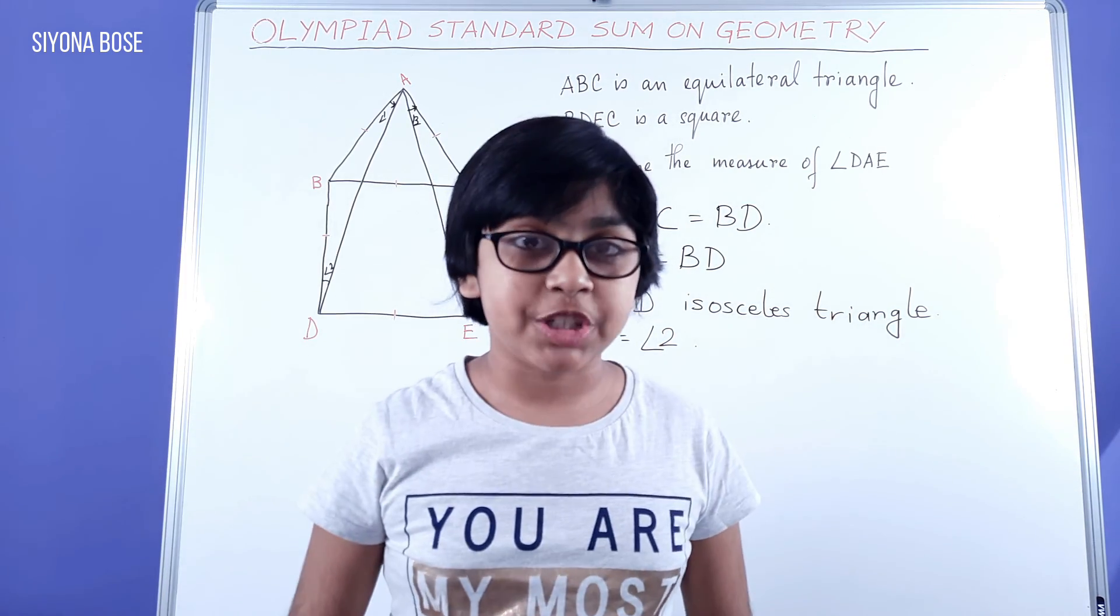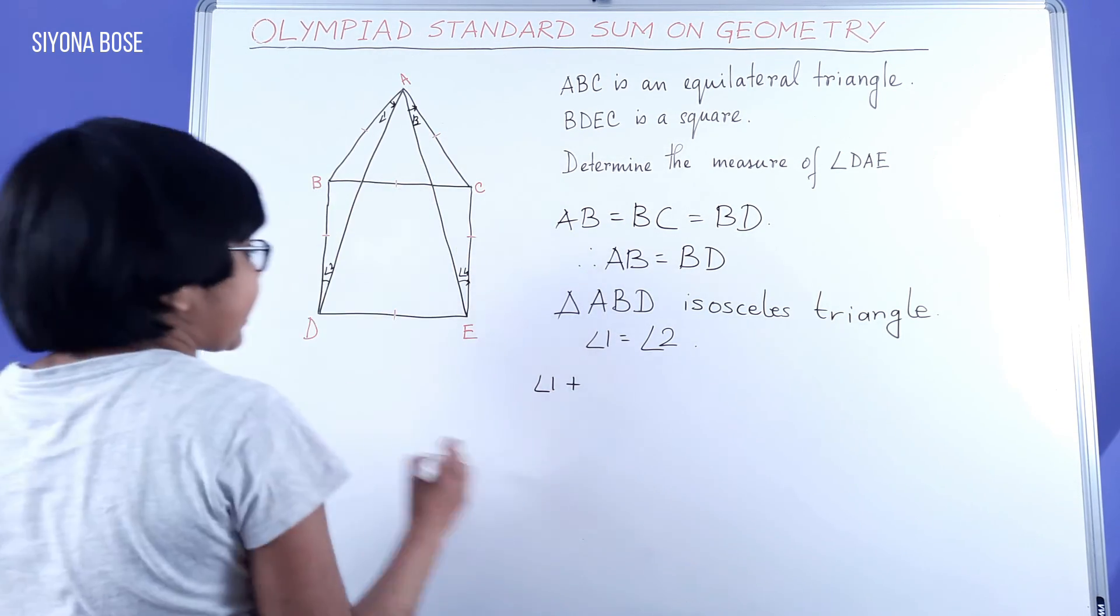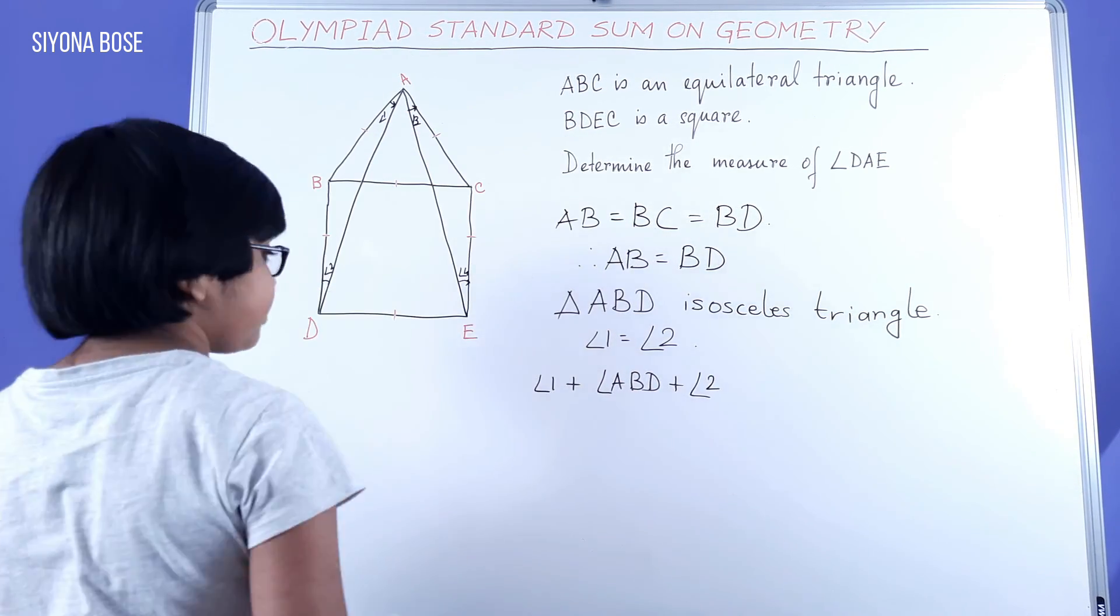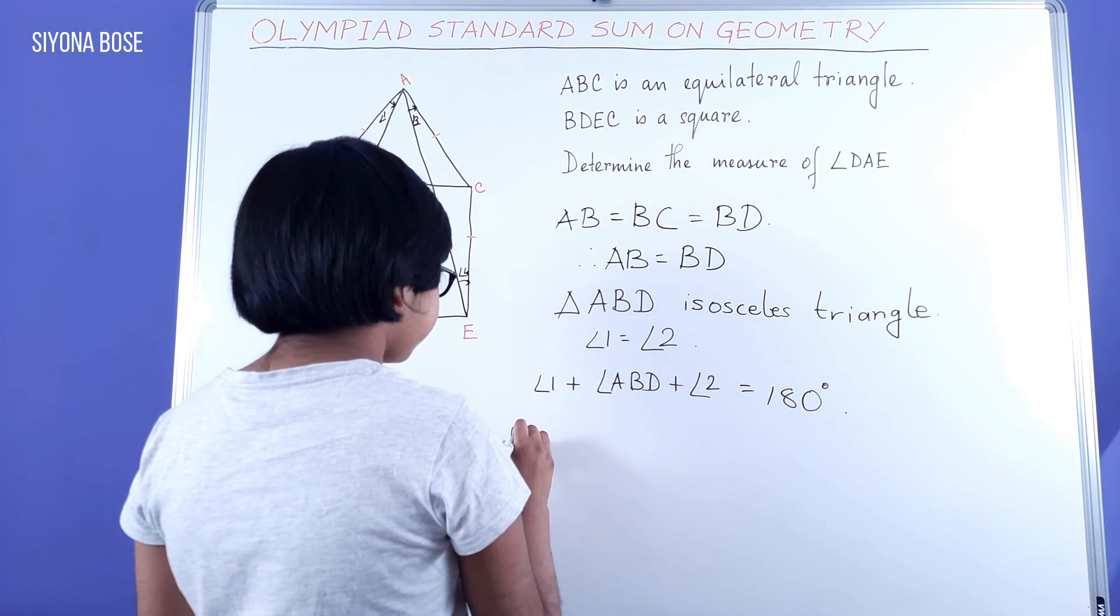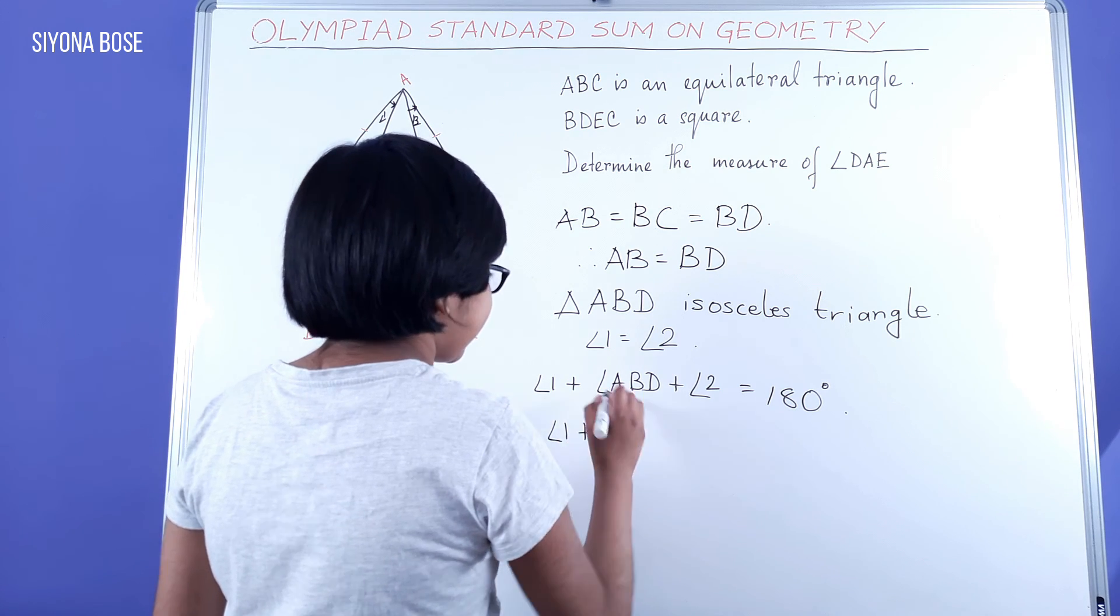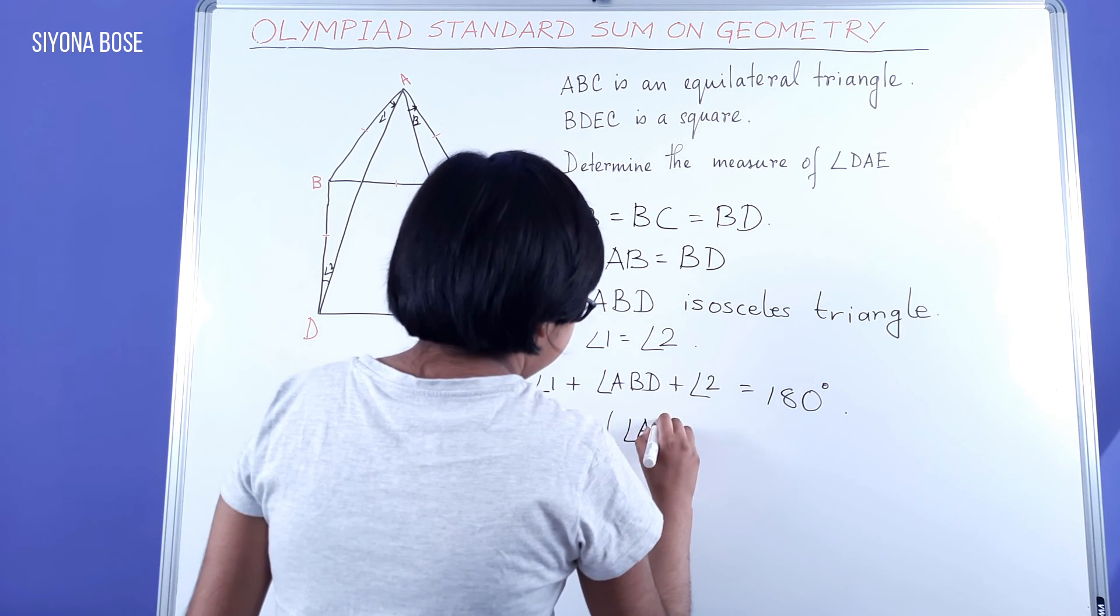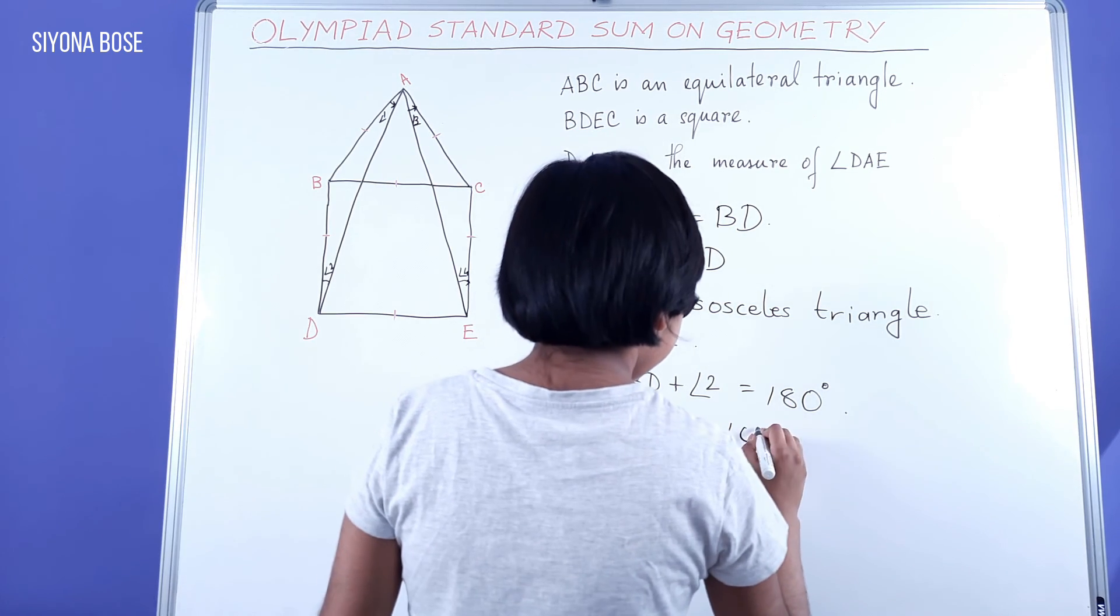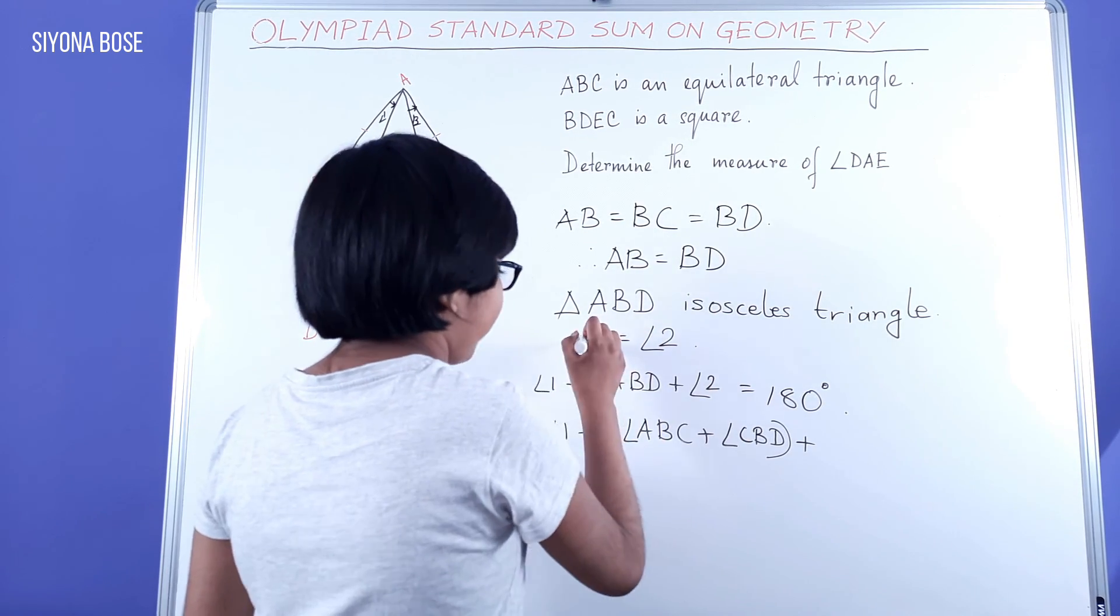Now, let's make an equation. Angle 1 plus angle ABD plus angle 2 equal to 180 degrees. Or, angle 1 plus angle ABD can be expressed as angle ABC plus angle CBD.